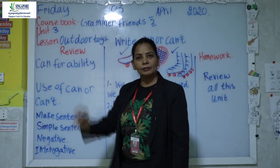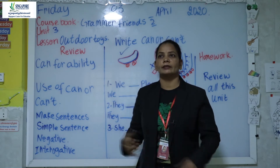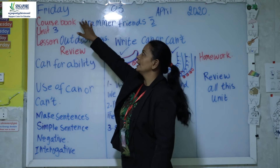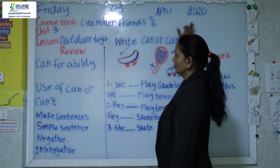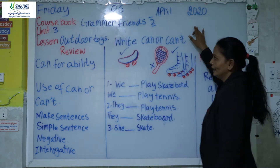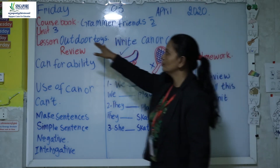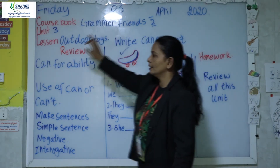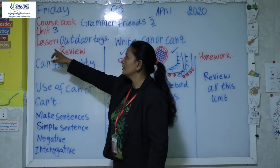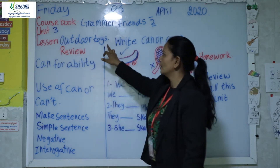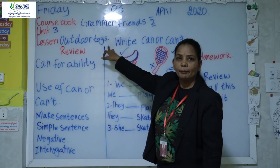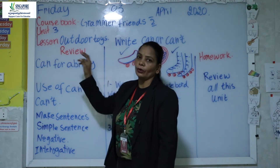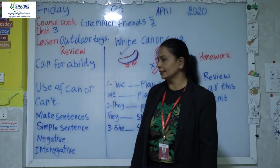The next month is coming — so the next month is April. We have to repeat: Friday, 3rd April 2020. The course book is Grammar Friends 2, Unit 3, the lesson is Outdoor Toys, page number 16. And this is a review of 'can' for ability.